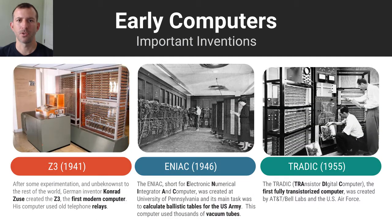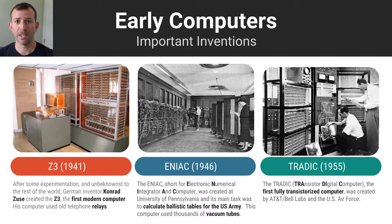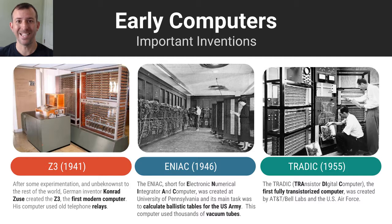Here are some of the precursors to the modern computer, each using these early technologies to represent ones and zeros. In 1941, German engineer Konrad Zuse came up with the Z3, which used electronic relays. The United States Army and the University of Pennsylvania came up with the ENIAC, a computer used to calculate ballistic missile tables, featuring vacuum tubes. And then there was the TRADIC, a joint venture between AT&T and the US Air Force, which was the first fully transistorized computer.